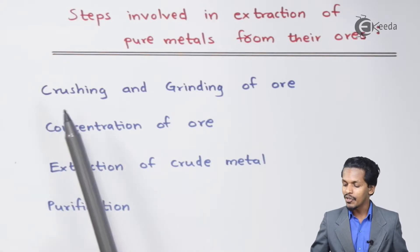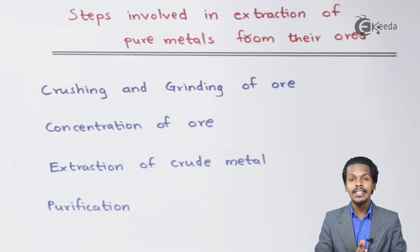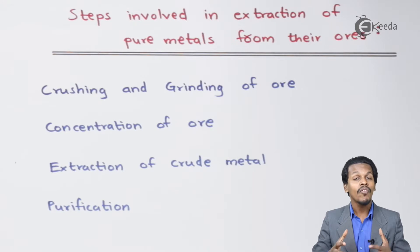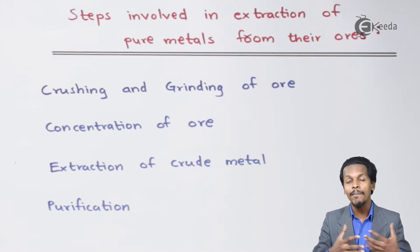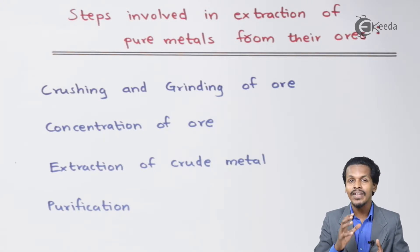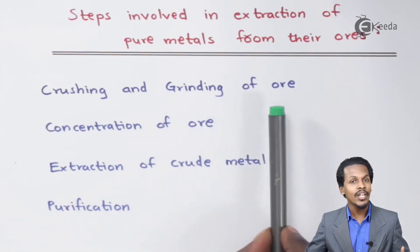Starting with the first point, that is crushing and grinding of ore. This is the main and important part. The reason behind that is the ore that we naturally get from mining — they are of bigger size, and that's why it is very difficult to obtain the main metal from them. So what we do is we crush it, making the surface area more, so that the ores can be reduced to a particular size. After achieving that size, they can be used in other processes to extract the metal.